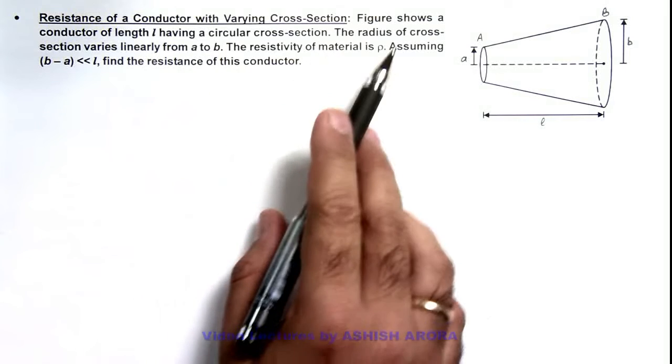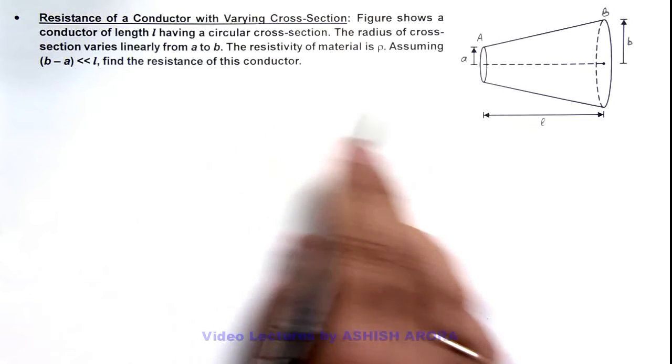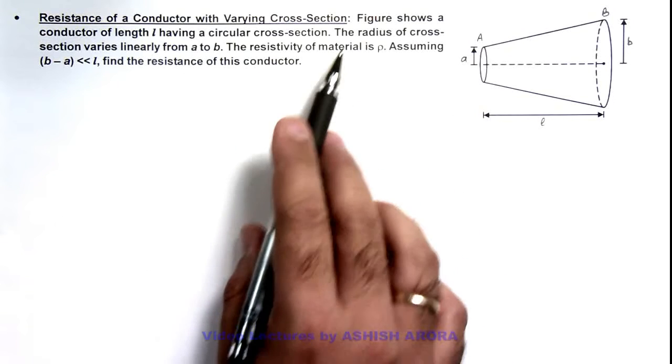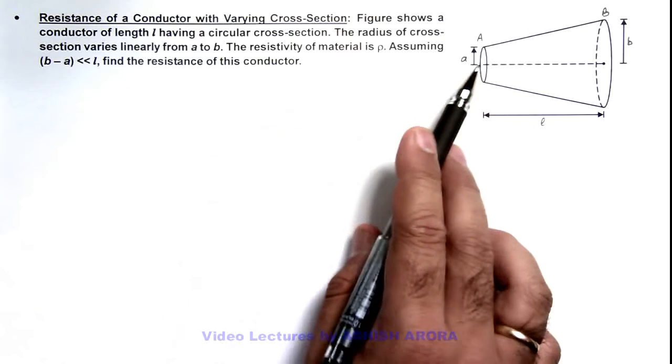Here you can see the figure shows a conductor of length l having a cross-section which is varying. The radius of cross-section varies linearly from radius a to b.